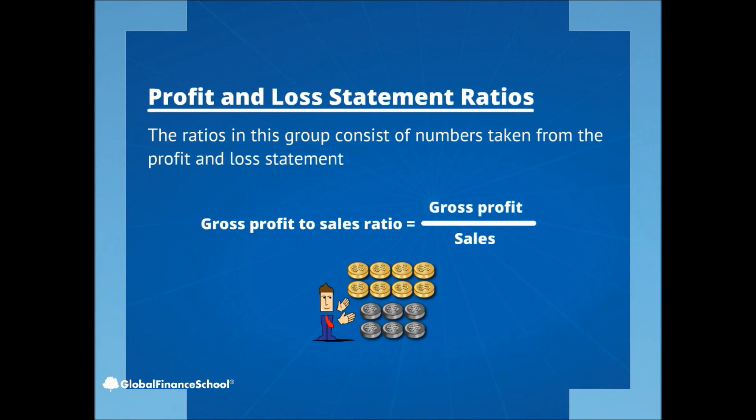Profit and loss statement ratios. The ratios in this group consist of numbers taken from the profit and loss statement. One of the popular ratios in this group is the gross profit to sales ratio. Gross profit to sales ratio equals gross profit divided by sales. This ratio's purpose is to evaluate the company's ability to generate profit on its sales.